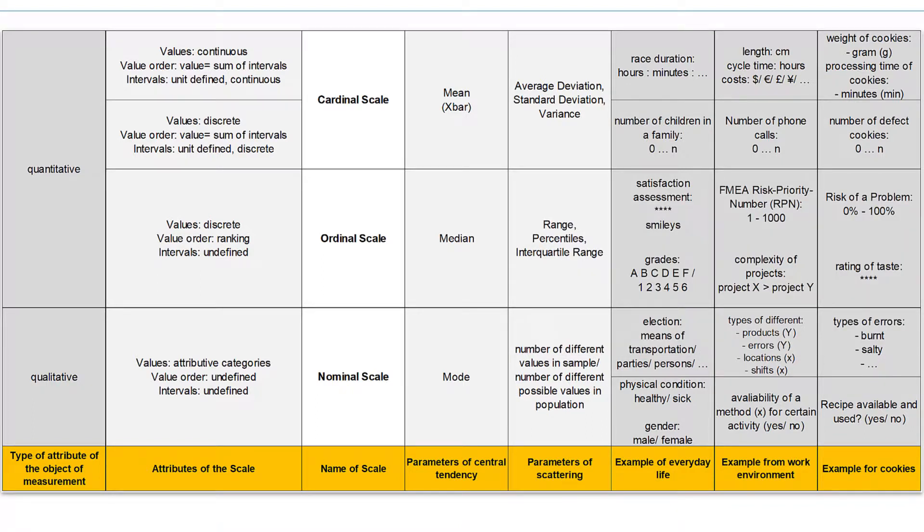The better discriminatory ability from level to level can be seen in the information provided by the parameters. Because for example the mean carries more information than the median, and the median more than the mode. And the same applies to the corresponding scattering parameters.